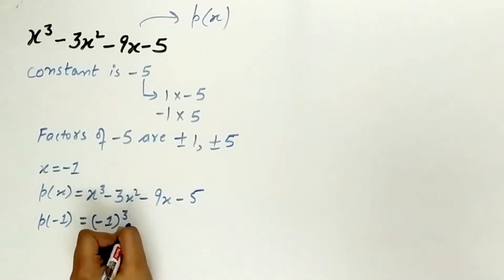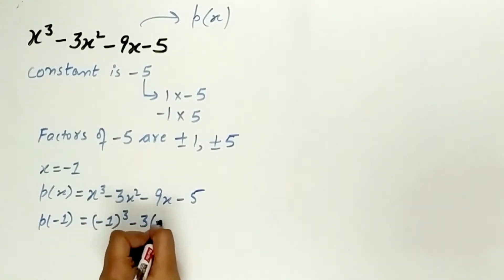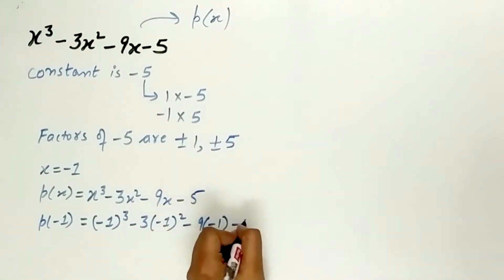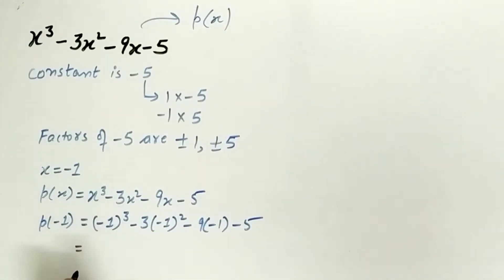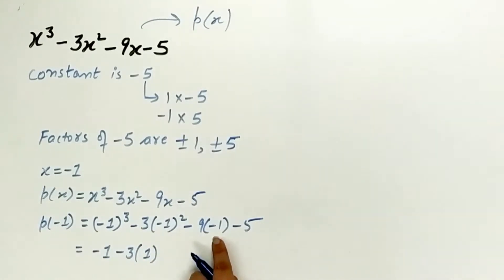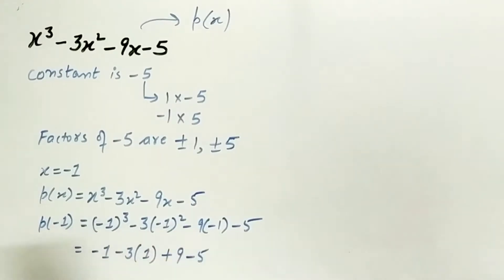Minus 1 whole cube minus 3 multiply minus 1 whole square minus 9 multiply minus 1 minus 5. Minus 1 whole cube is minus 1. Minus 1 square is 1. Minus 9 multiply minus 1 is plus 9 minus 5.